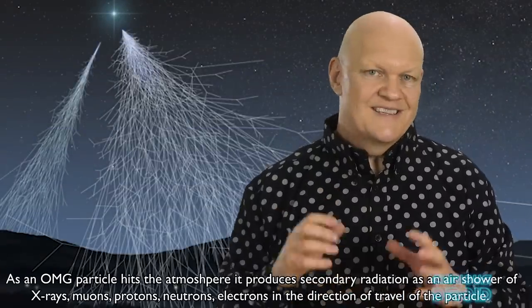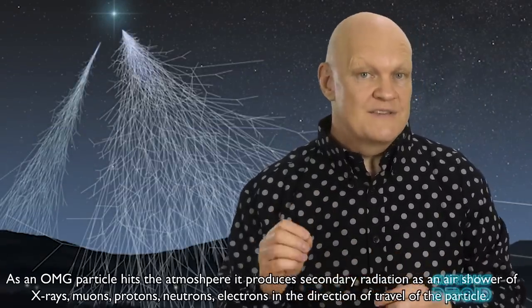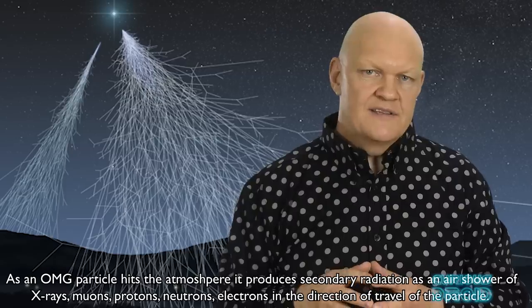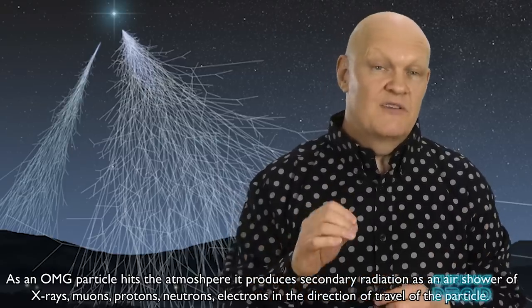So what would happen if one hit you? Well, apart from a barely noticeable atom-size hole, not much. But you would be showered in secondary radiation from all the atoms it interacted with on its way towards you, and then the same again with all the atoms it interacted with inside you as it went through. Which incidentally is the same method used to irradiate tumors in the body, but without an OMG particle.